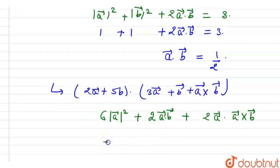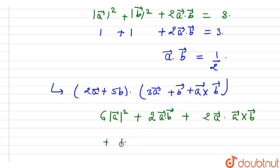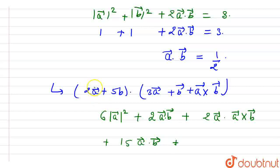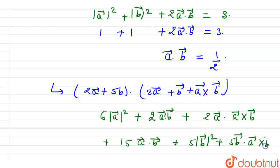Multiplying 5V by 3A gives 15 times A vector dot V vector. Multiplying 5V by V gives 5 times modulus of V vector squared. And multiplying 5V by A cross V vector gives 5 times V vector dot (A vector cross V vector).